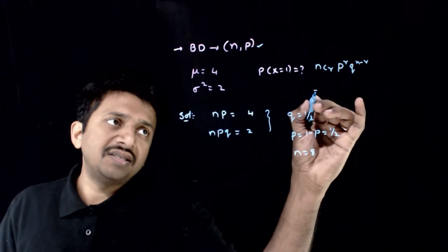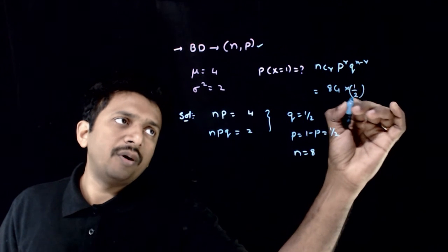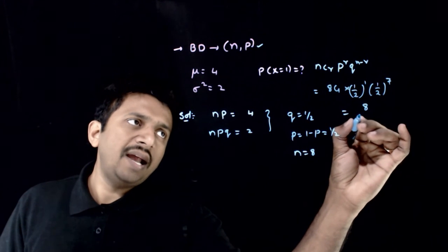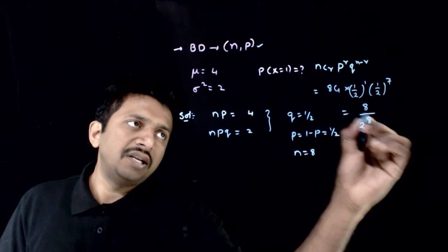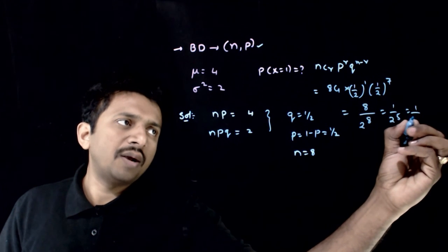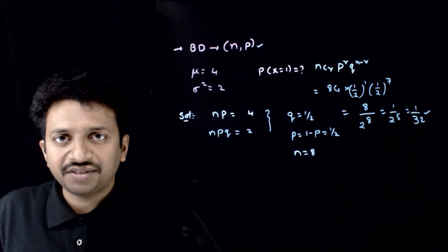So what is the probability that x is equal to 1? 8C1 into 1 by 2 whole power 1 into 1 by 2 whole power 8 minus 1 is 7. That is equal to 8 by 2 power 8. That is equal to 1 by 2 power 5, 1 by 32. So this will be the answer. Thank you.